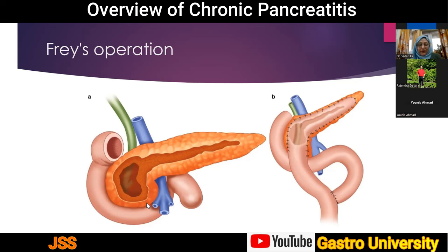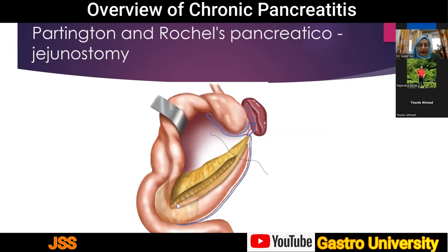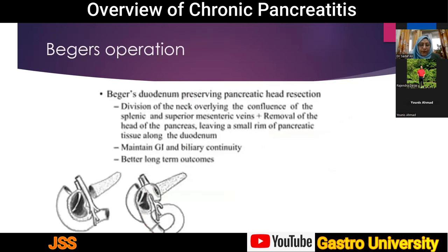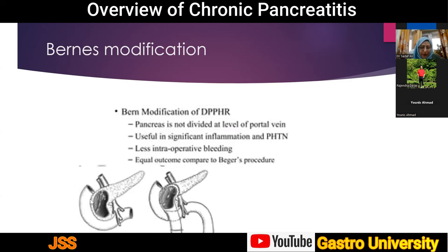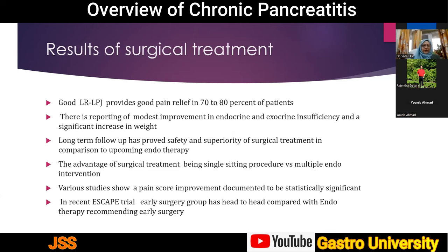In the Frey procedure, the pancreatic head is cored out in piecemeal with securing sutures around the C-loop of the pancreas for hemostasis — though the coring can be bloody in a fibrotic pancreas. In lateral pancreaticojejunostomy or Partington-Rochelle, no coring is done; the duct is opened right to the tail into the splenic hilum. In the Beger operation, there is complete transection at the portal vein level, excision of the head along the C-loop of the duodenum, and two anastomoses — pancreaticojejunostomy and a second anastomosis for the remaining head segment. Berne's modification avoids transection and creates a single anastomosis.